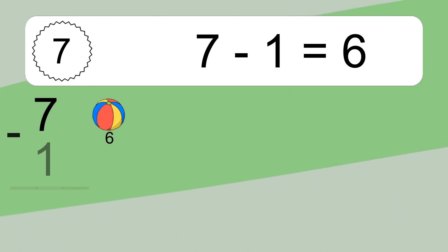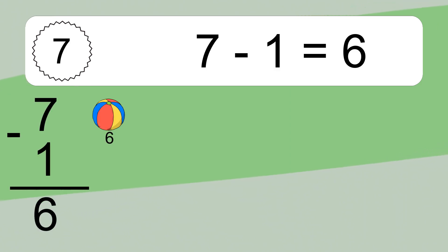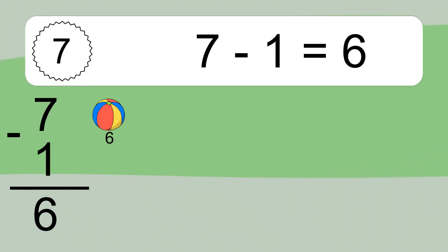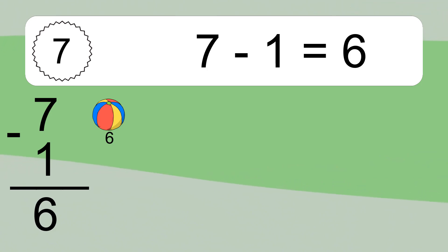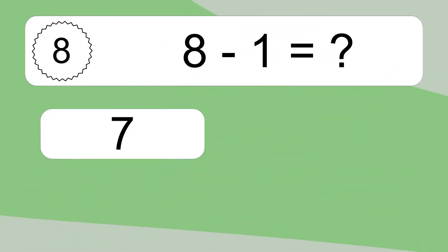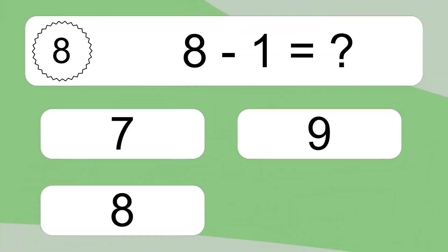7 minus 1 equals what? 7 minus 1 equals 6. Let's count it: 6.